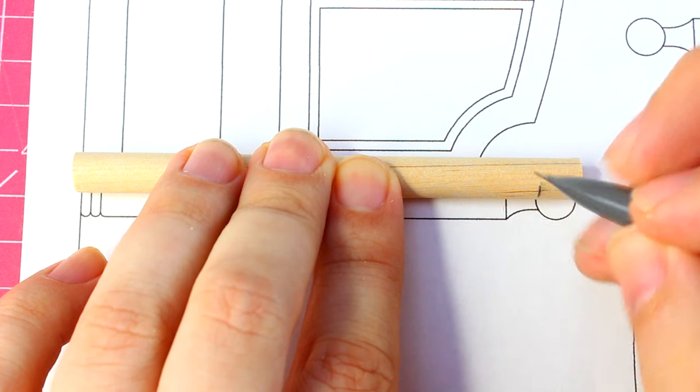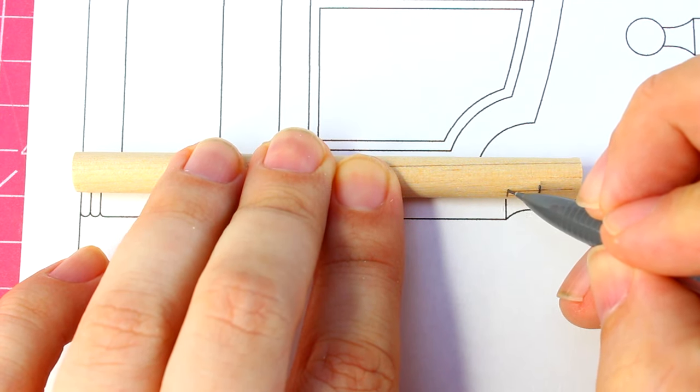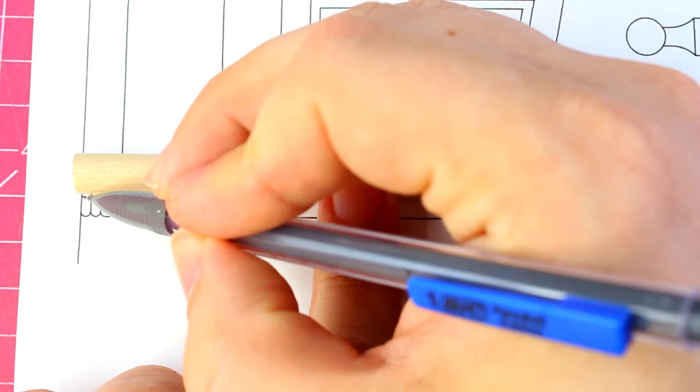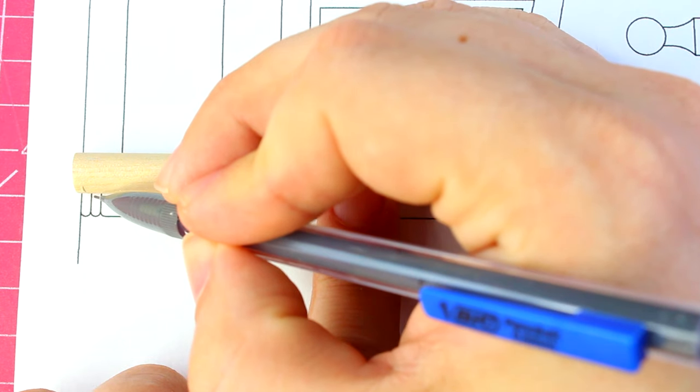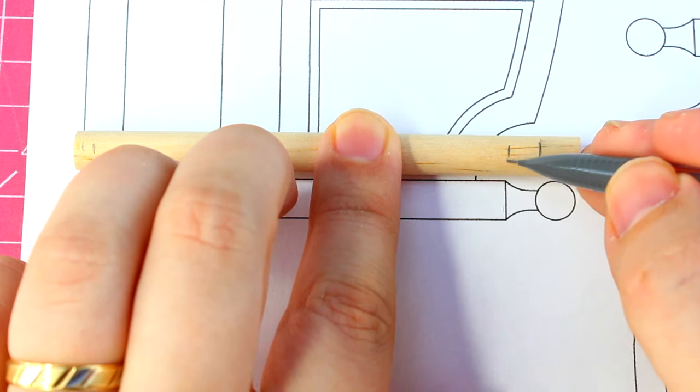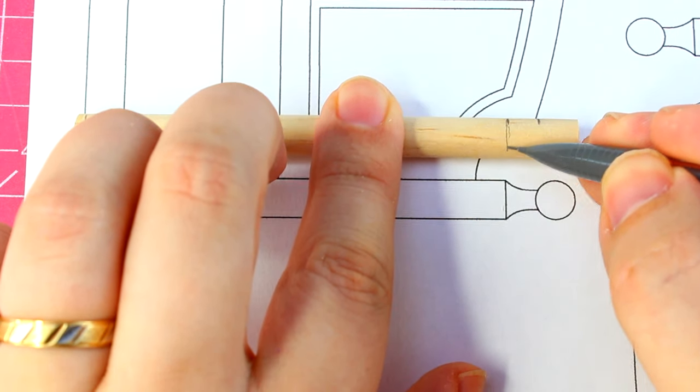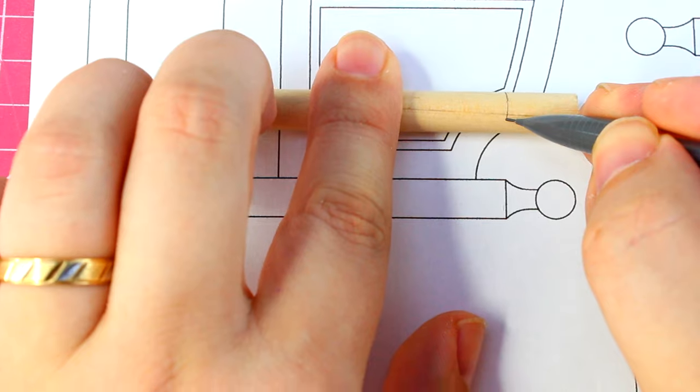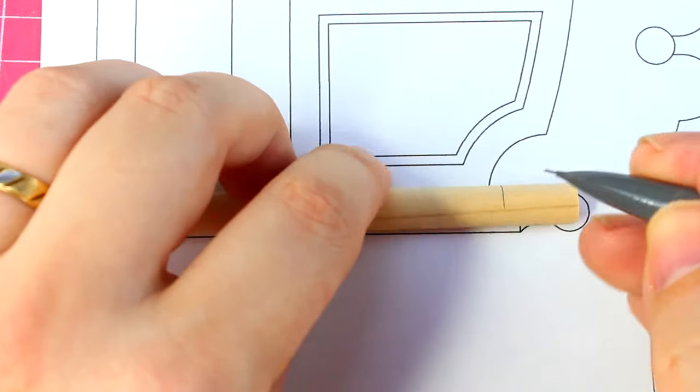Now I'm using my drawing to mark out the transition points on the post. This will guide my carving later on. Your marks don't have to be precise, just close. You can make a pretty even mark all the way around the dowel by holding the pencil still and rotating the dowel. It won't be perfect, but it's good enough for what we need.